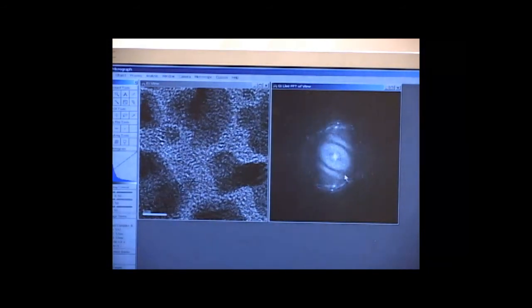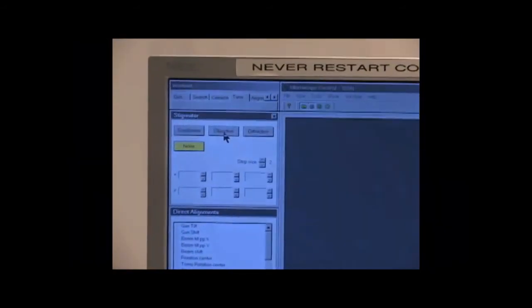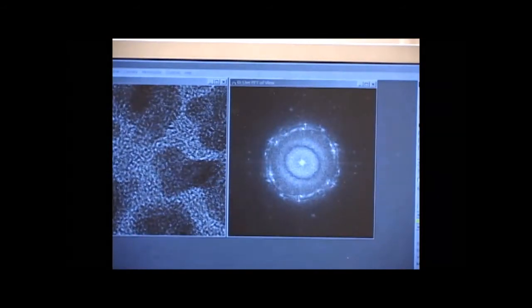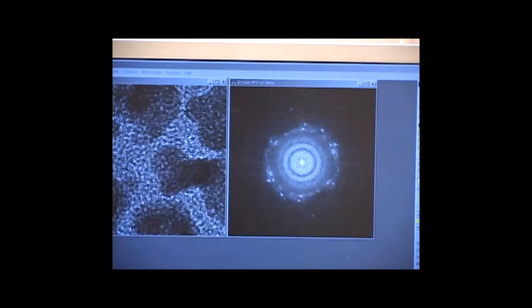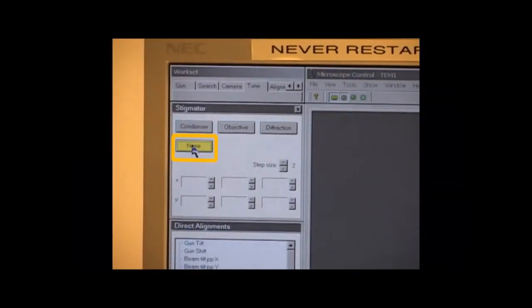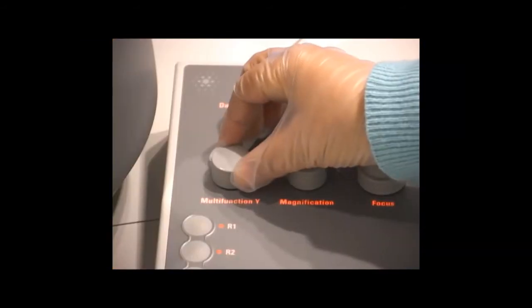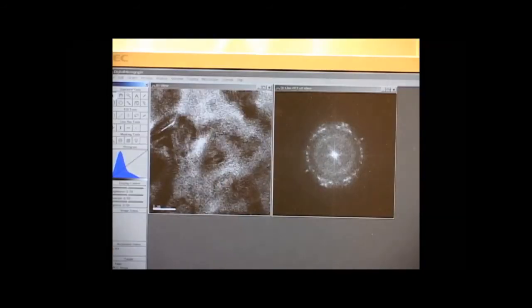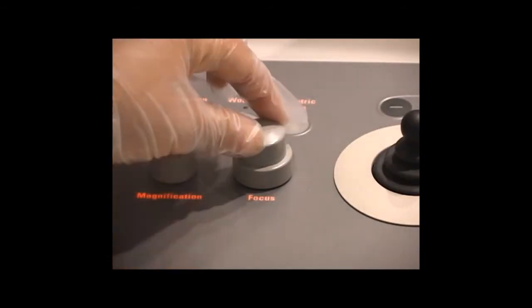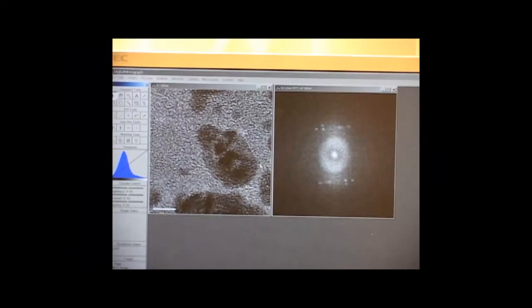Higher magnification is more sensitive to objective stigmation, so it is necessary to correct it again. In the Microscope Control, select Tune, Objective, and then use the multifunction knob to make the FFT image round. The ring of spots is the diffraction pattern from the gold nanoparticles. After the correction, click None to disable the stigmation adjustment. At high magnification, it is best to use the multifunction dial to move the image around rather than moving the sample. Adjust the focus step with the dial collar and use the smaller dial to fine-tune the focus. Use smaller steps at higher magnification. In phase contrast mode, the crystal lattice of the gold particle can be seen.